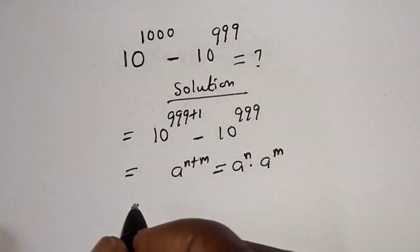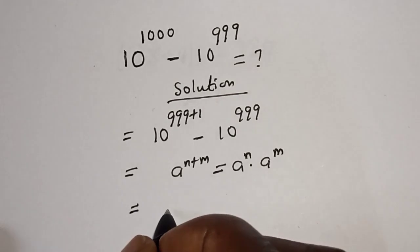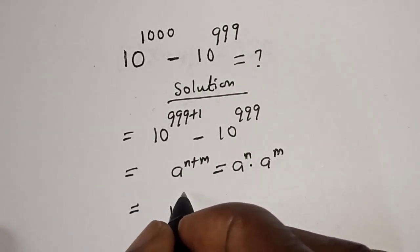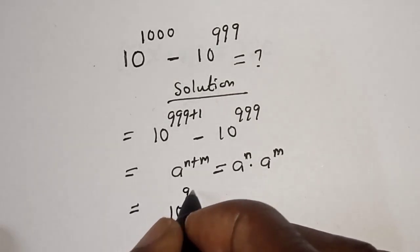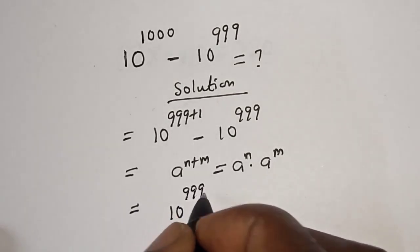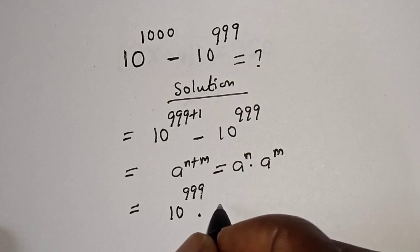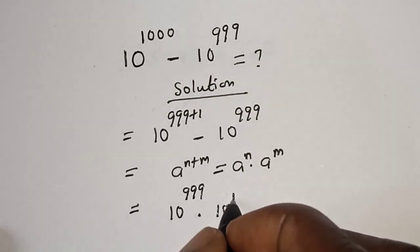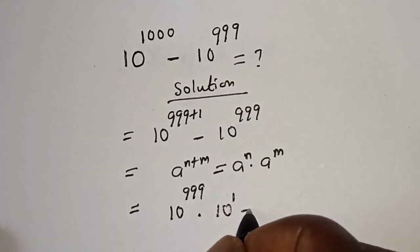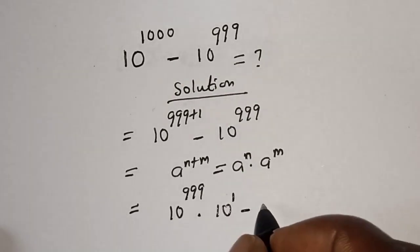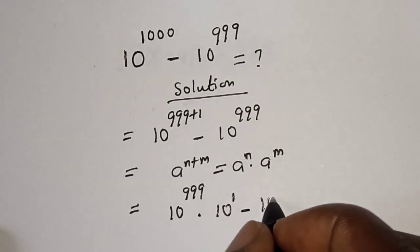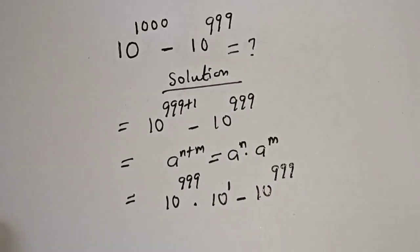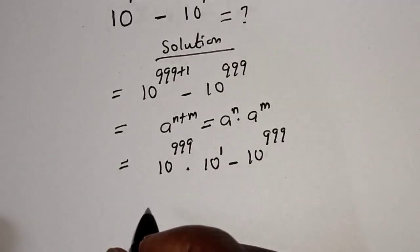This is equal to 10 raised to power 999 multiplied by 10 raised to power 1, minus 10 raised to power 999.